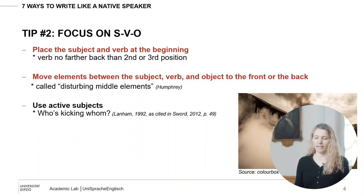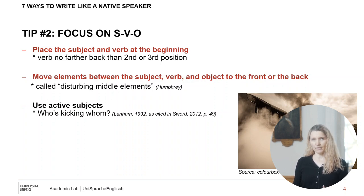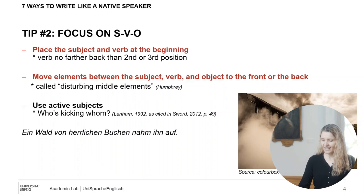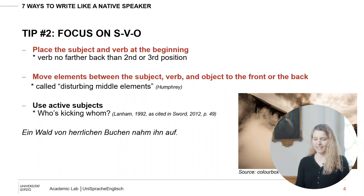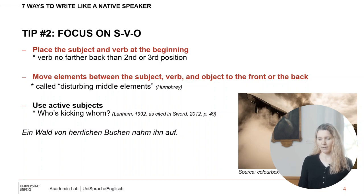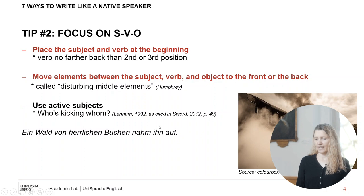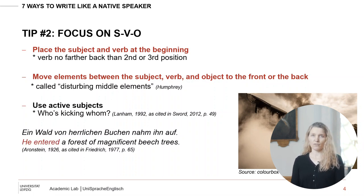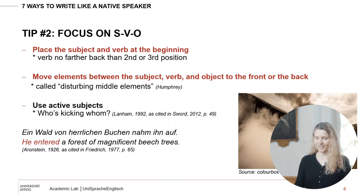We also want to use active subjects. Lanham said we need to know who's kicking whom in English. You want to have the person right up in the subject position — you wouldn't want to start with something abstract. In German we have 'ein Wald von herrlichen Buchen nahm ihn auf.' If we translate it directly: 'a forest of magnificent beech trees took him up' — the person is hidden. With an active subject, the subject and verb are right up at the front, providing structure for the entire sentence. So tip number two: don't forget the subject-verb-object.